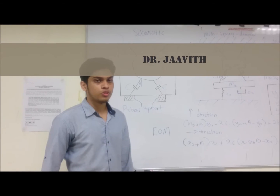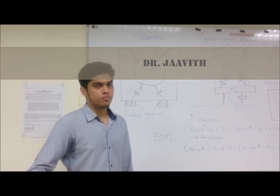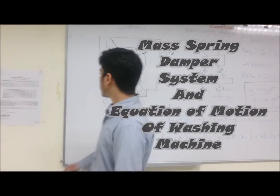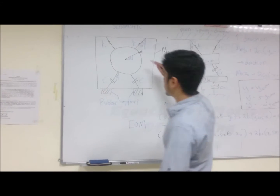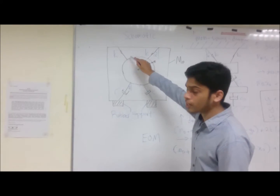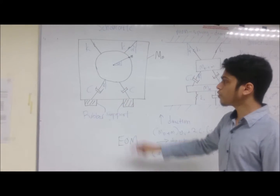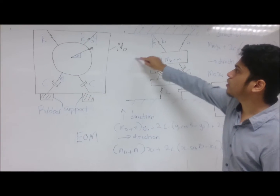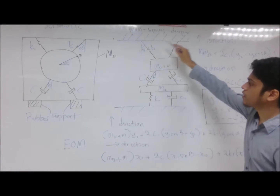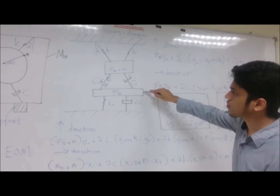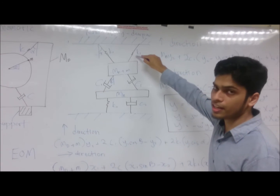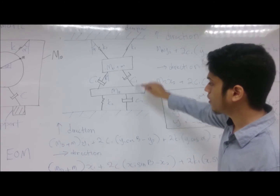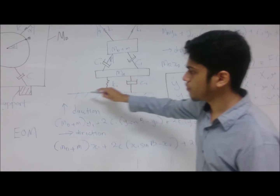We are going to explain the mass spring damper system and the equation of the washing machine. This is the schematic diagram. We have two springs, two dampers, and a rotor spot. From the schematic diagram, we convert it into a mass spring damper system. We have an inclined angle of spring, inclined angle of damper, and the rotor spot itself.